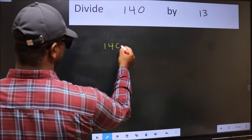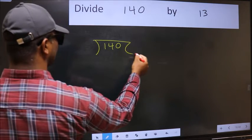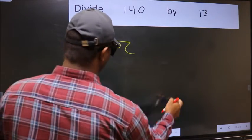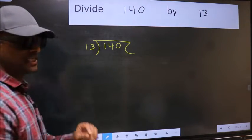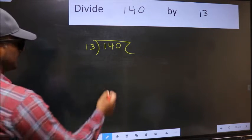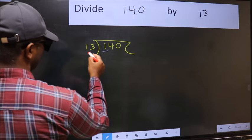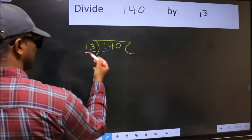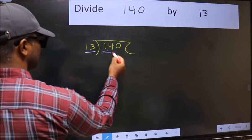140 and 13 here. This is your step 1. Next, here we have 1 and here 13. 1 is smaller than 13, so we should take two numbers, 14.